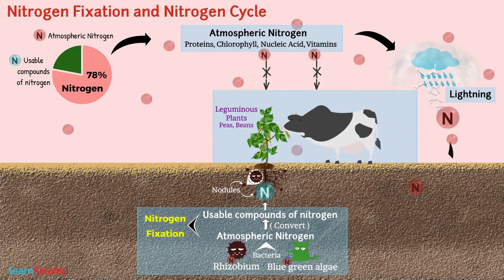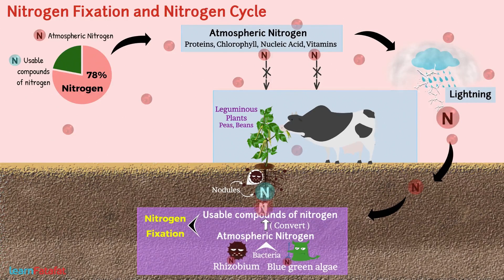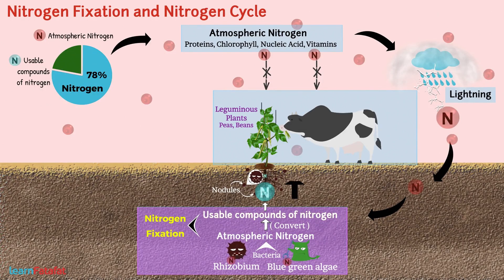Now, once the nitrogen is fixed, i.e., converted into usable compounds, plants absorb it from the soil with the help of roots.